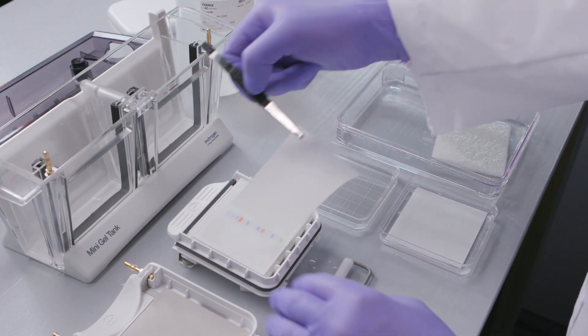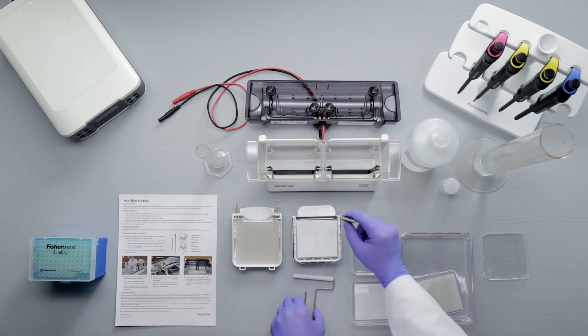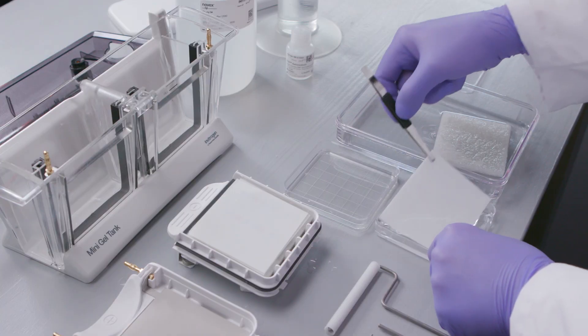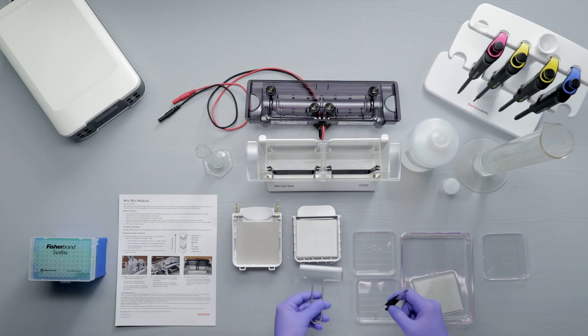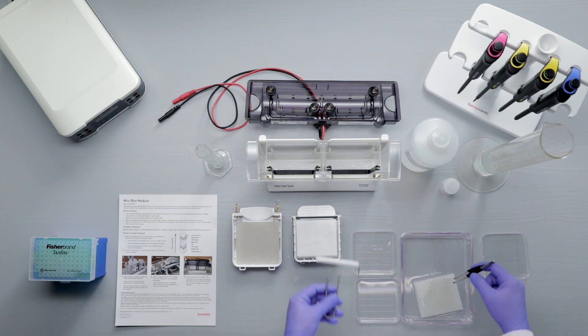Using tweezers, place the membrane on top of the gel and roll once more. Complete the stack by layering another pre-wetted filter paper on top of the membrane, removing bubbles, and placing pre-wetted sponge pads on top of the filter paper.